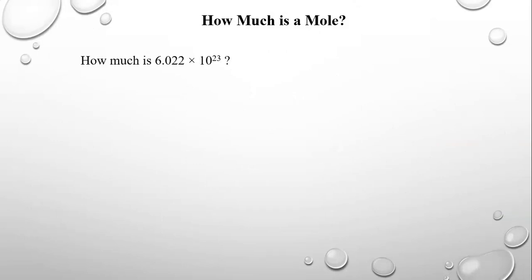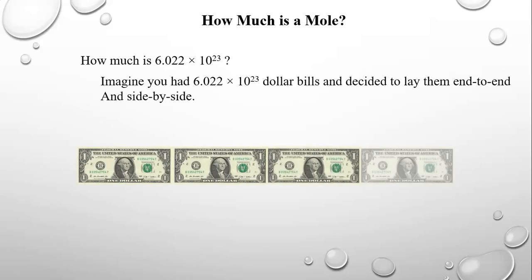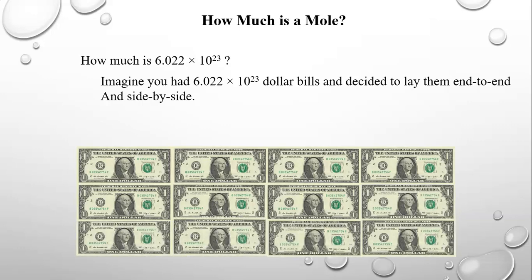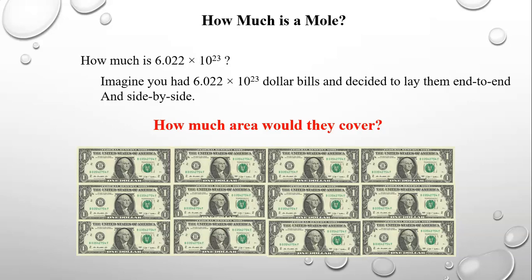How much is a mole — how much is that number? Well, imagine you had that number of dollar bills and decided to lay them end-to-end and side-by-side. How much area would they cover? Would they cover all of Hoover High School? All of the city of San Diego? All of the state of California? You have 6.022 times 10 to the 23rd dollar bills, laid end-to-end and side-by-side — basically creating a carpet out of dollar bills. How much surface area would they cover?